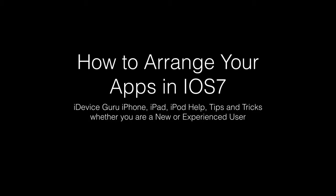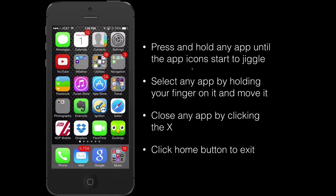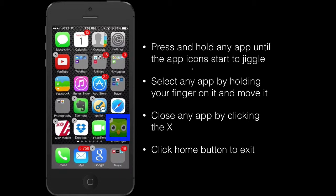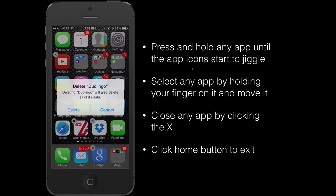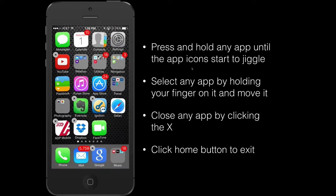Tip number eight: I'm going to show you how to arrange your apps on the home screen. Press and hold on any one of your apps and you'll see all the app icons start to jiggle. Then hold down on the app you'd like to move and drag it to its new position. If you'd like to delete an app, click the little X in the top corner, and you'll get a warning asking if you'd like to delete it — click yes and it will delete the app and all its data from the phone. When finished, click the home button.